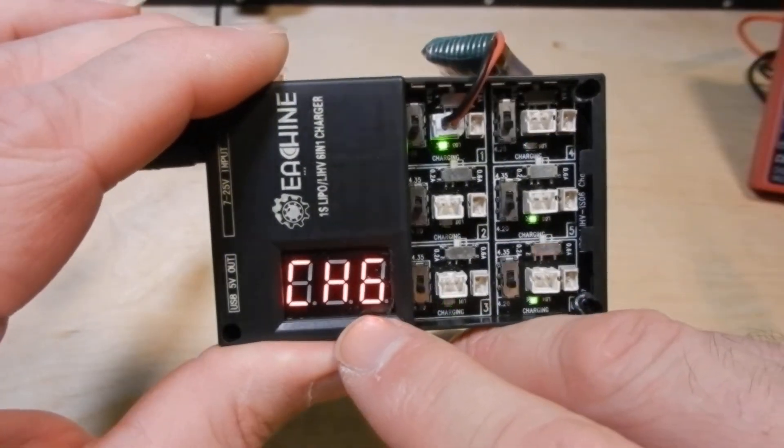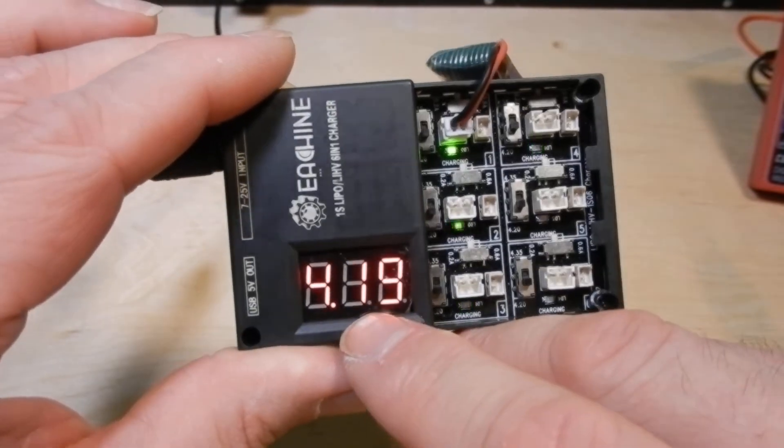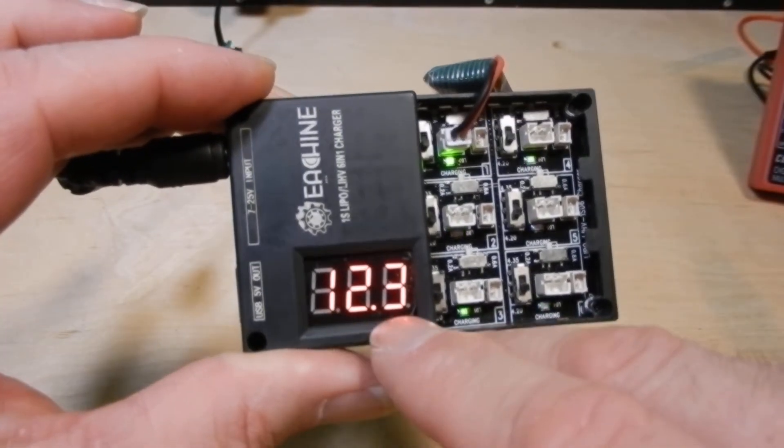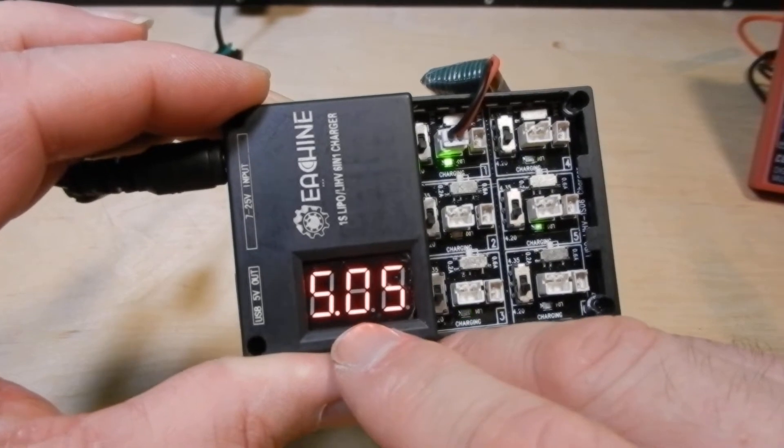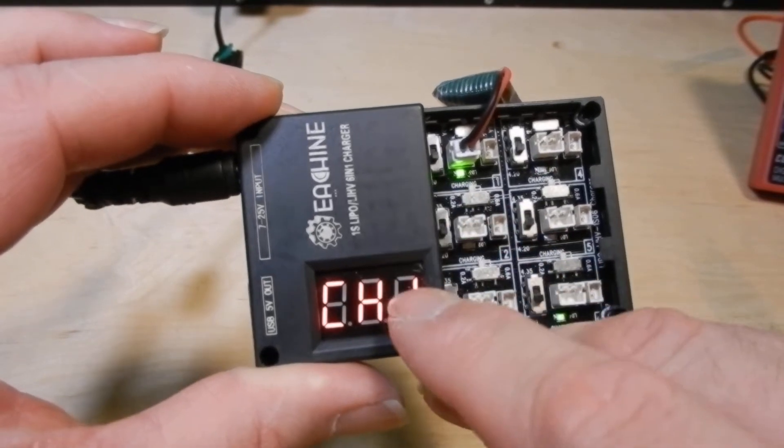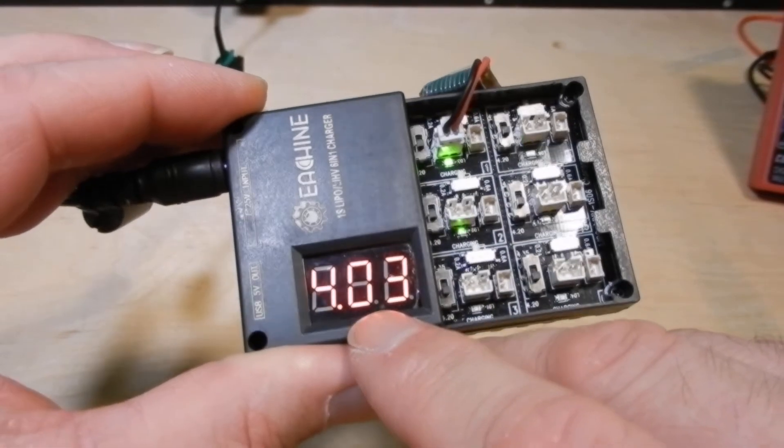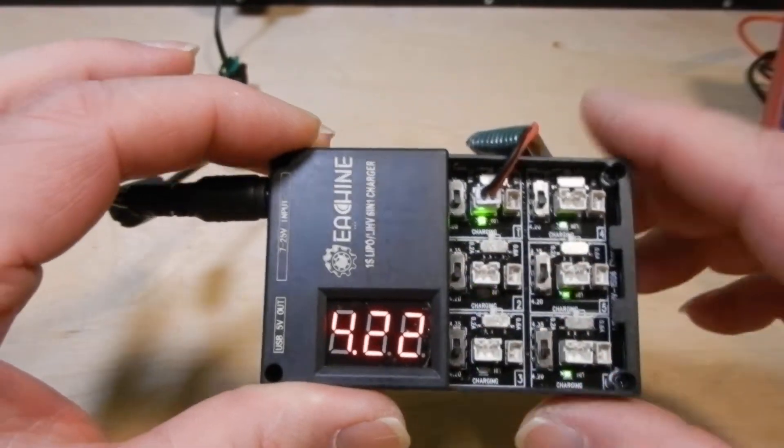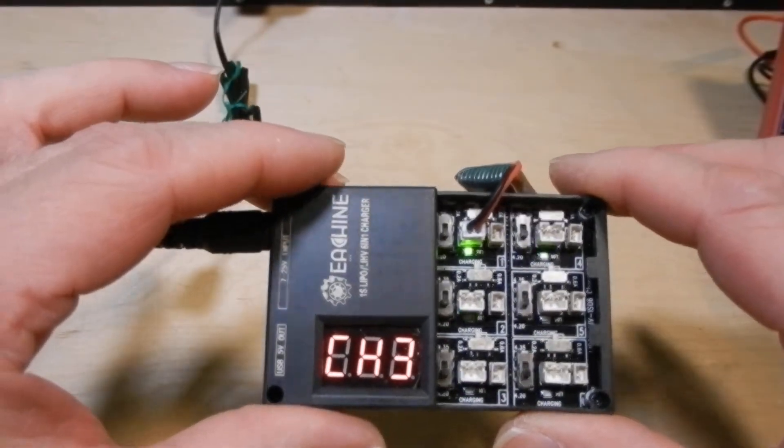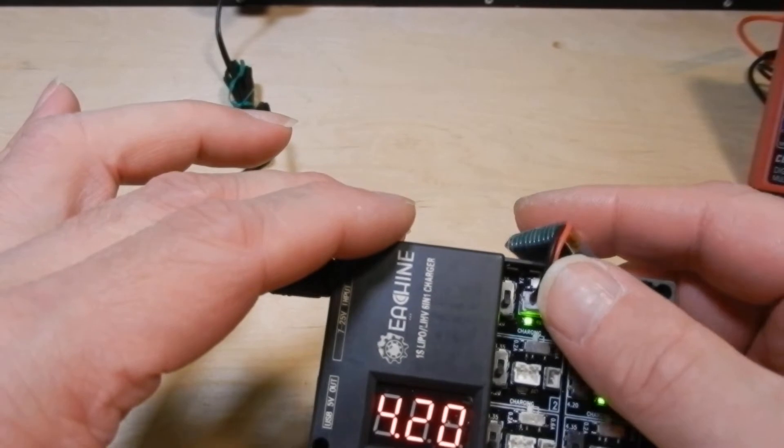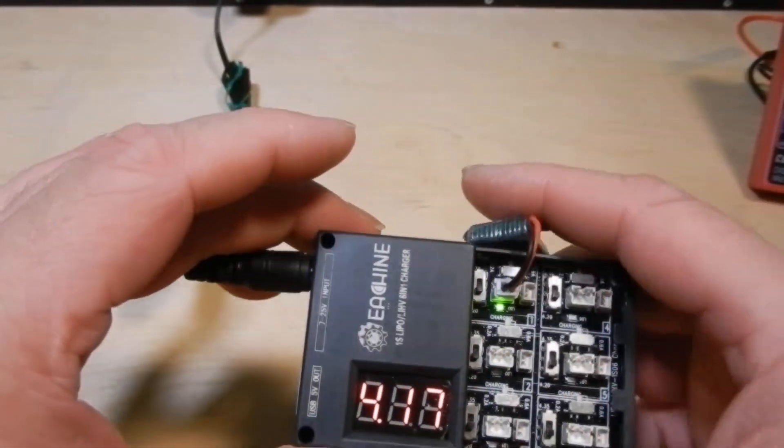But right now, let's get the cycle back around here. I'll show you this as it goes. Input voltage, 12.3. USB output, 5.05. Channel 1 is 4.03 at the moment. So when that reaches the 4.2 or right around there, the light will go out and it should stop charging. Then you would pull it.